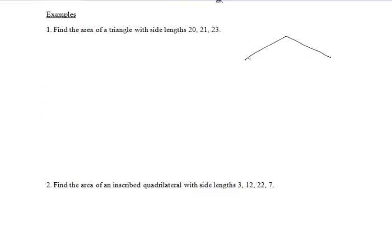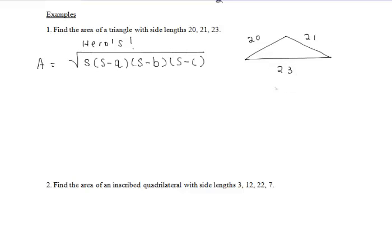Let's do example problem 1 together. We want to find the area of a triangle with side lengths 20, 21, and 23. We should be thinking of Heron's formula since we know all three sides of the triangle. First, we have to find our semiperimeter by adding up all three sides and dividing by 2, which gives us 64 divided by 2, so the semiperimeter is 32.